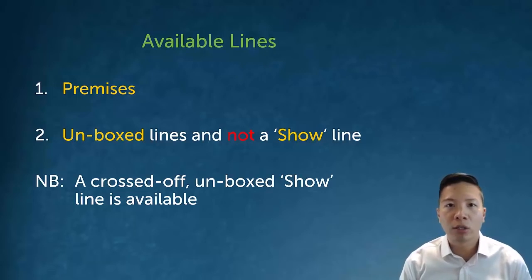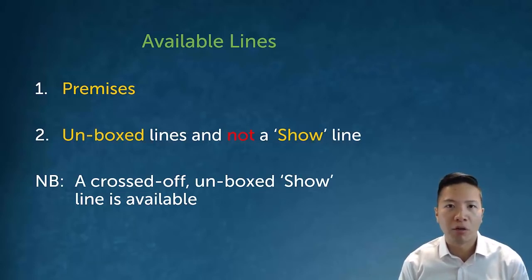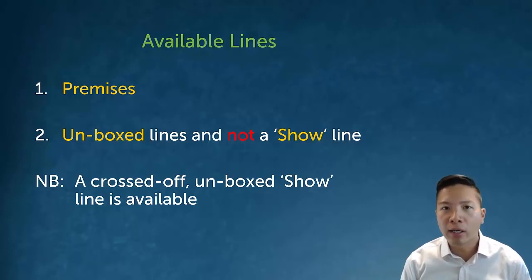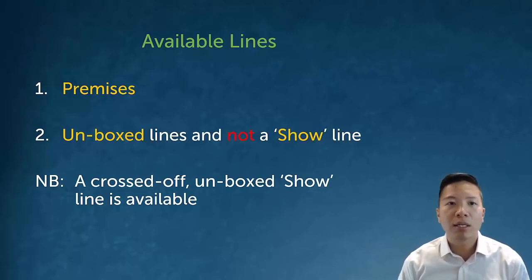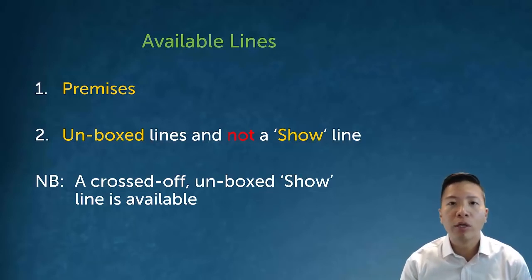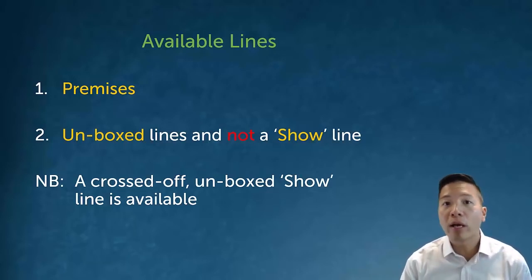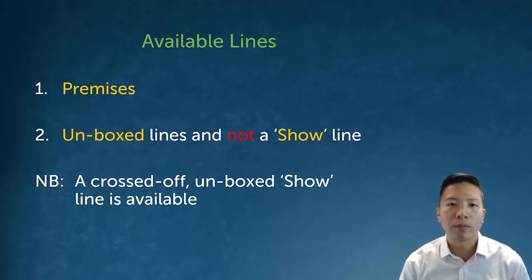Fundamentally, here's what is considered an available line. You can always use the premises of your argument at any point in a derivation. You can also always use any unboxed line that is not a show line — because a show line isn't something you already have; it's something you're hoping to eventually show. You can't use something you're trying to show, as that would be begging the question and would create a circular argument.